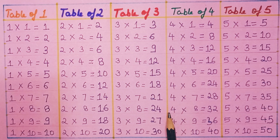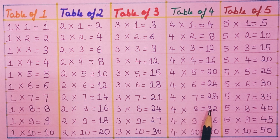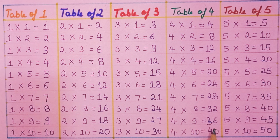Four eights are thirty-two. Four nines are thirty-six. Four tens are forty.